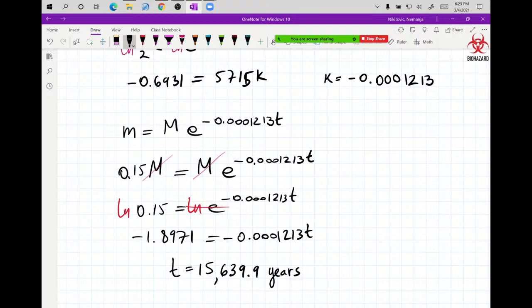So now divide this by negative 0.0001213 and we get T equals 15,639.9 years. Now clearly this is a terrible number to present in your paper. So you would say about 15,500 years, because you can't really know this. Because there's rounding error. So I would answer about 15,500 years.